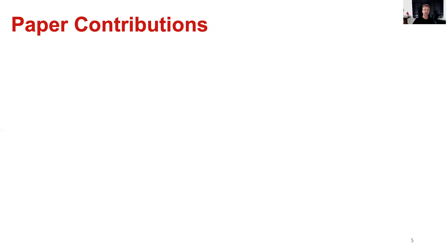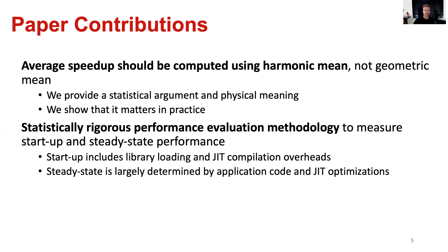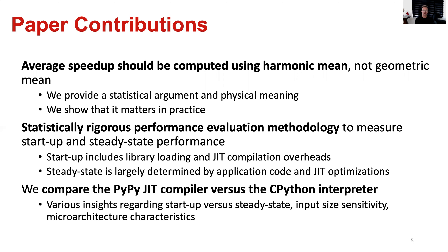This leads me to the paper contributions. We argue that average speedup should be computed using harmonic mean and not geometric mean, and we provide a statistical argument for this conclusion as well as a physical meaning for the harmonic mean speedup, and we show that it really matters in practice. Second, we propose a statistically rigorous performance evaluation methodology to measure startup and steady state performance. Startup performance includes library loading and JIT compilation overheads, whereas steady state is largely determined by application code and JIT optimizations. Using this methodology, we compare the PyPy JIT compiler versus the CPython interpreter, providing insights on startup versus steady state performance, input set size sensitivity, and microarchitecture analysis.